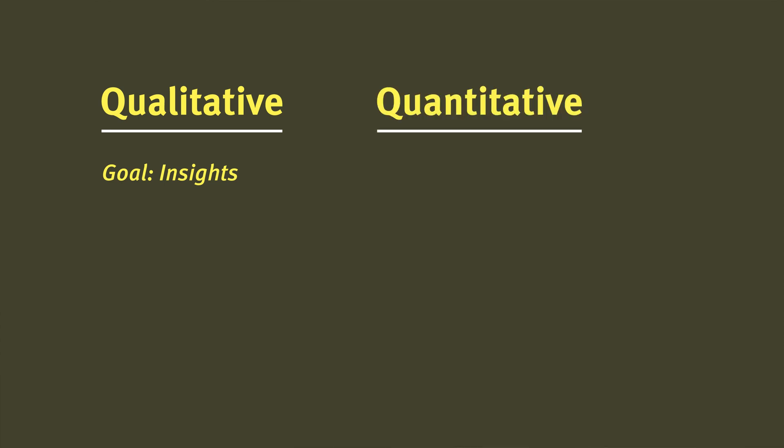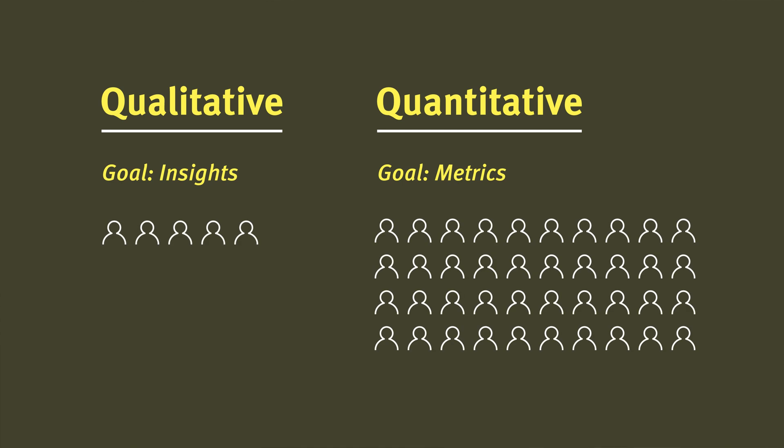In quantitative user testing, we're gathering metrics. We want to know, for example, how long it takes people on average to complete a task. As a result of these two very different goals, we have to structure and run these two types of usability studies very differently. For example, we need way more participants in a quantitative study than we would need for a qualitative one.